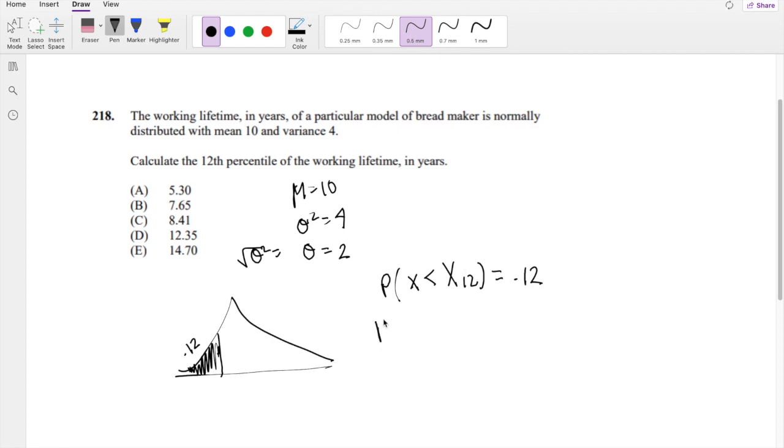So we can normalize it first. So x minus mean over standard deviation is less than the 12th percentile minus the mean over standard deviation, where this is the value that we're trying to find, whatever this 12th percentile value is.